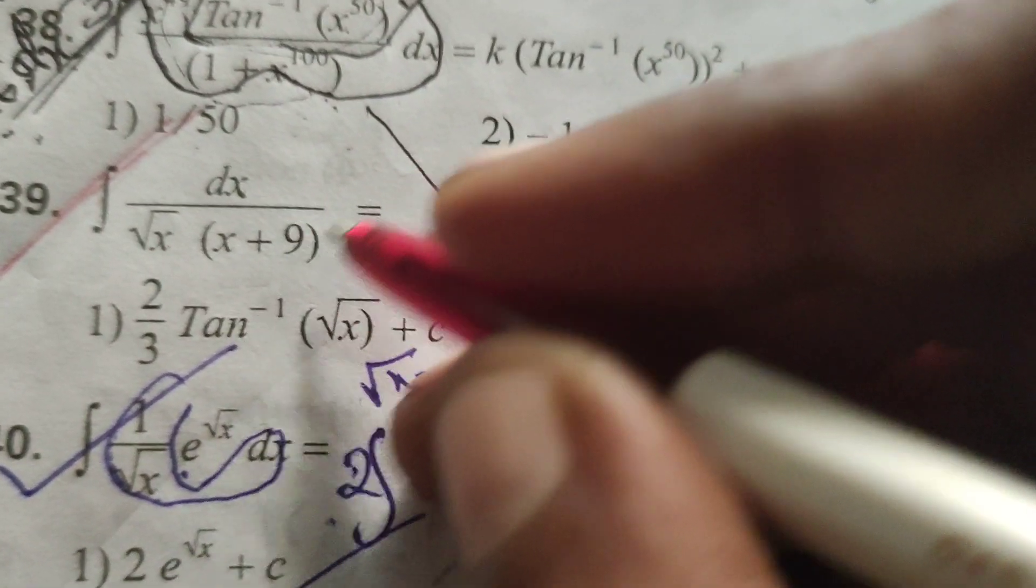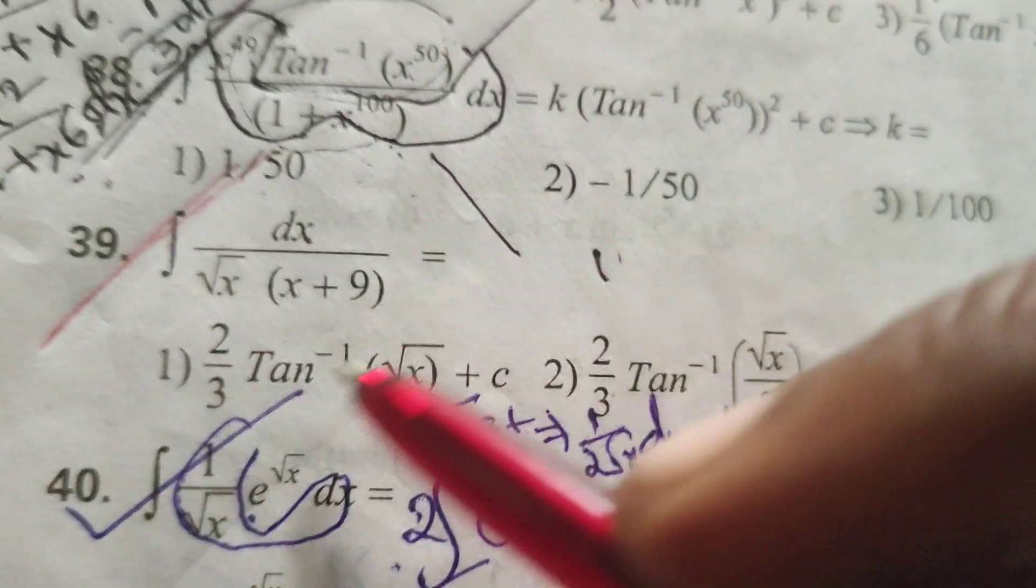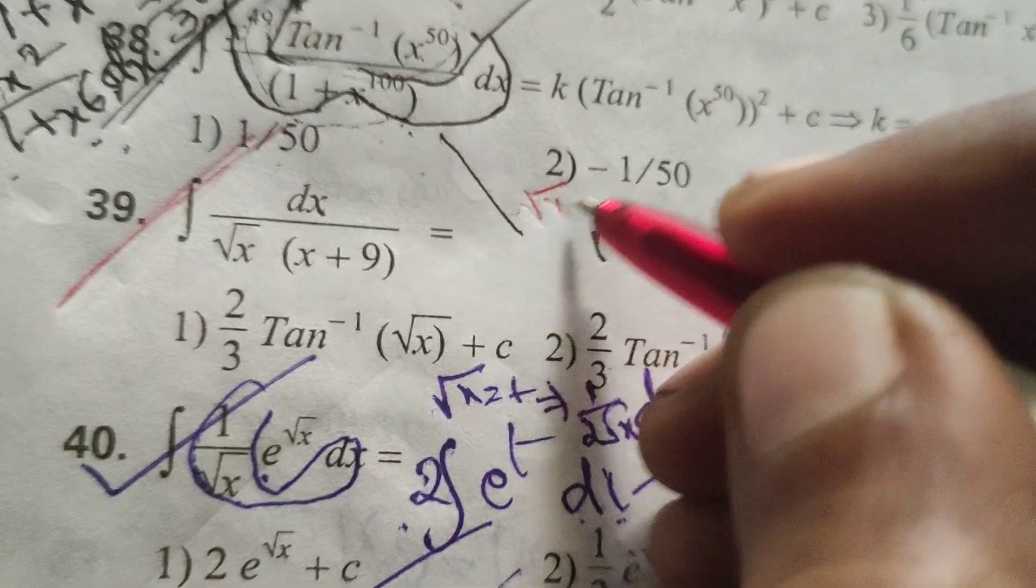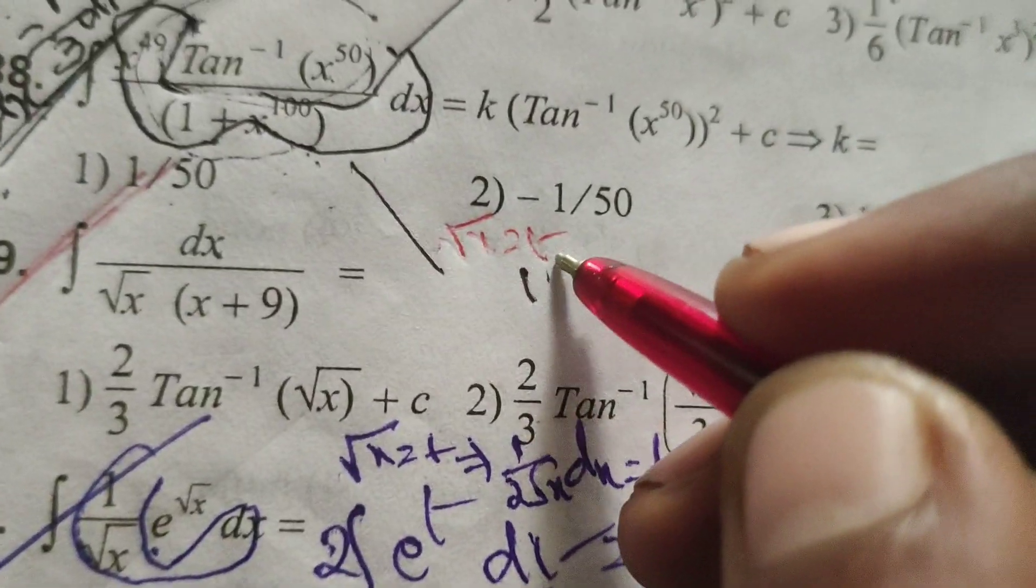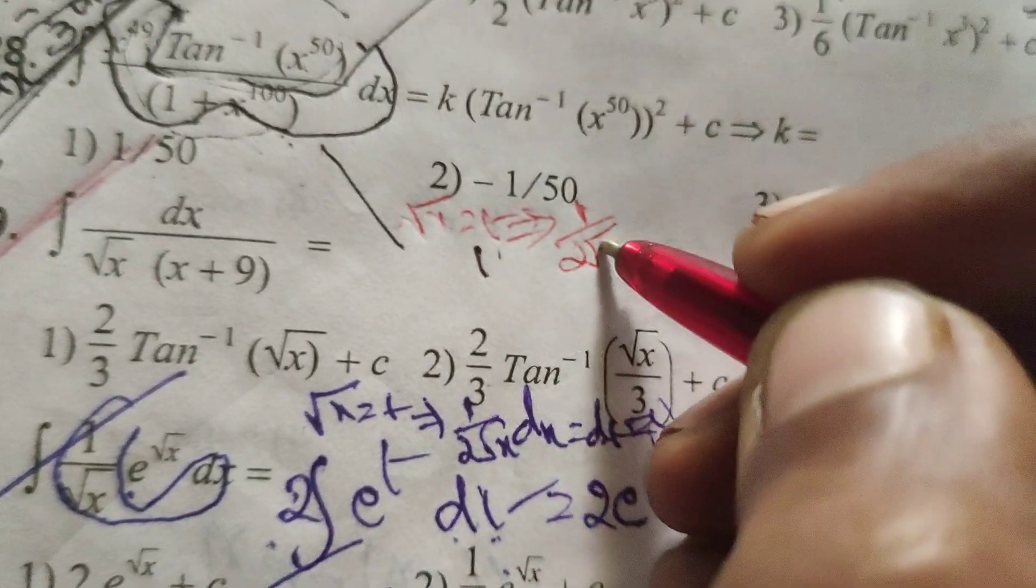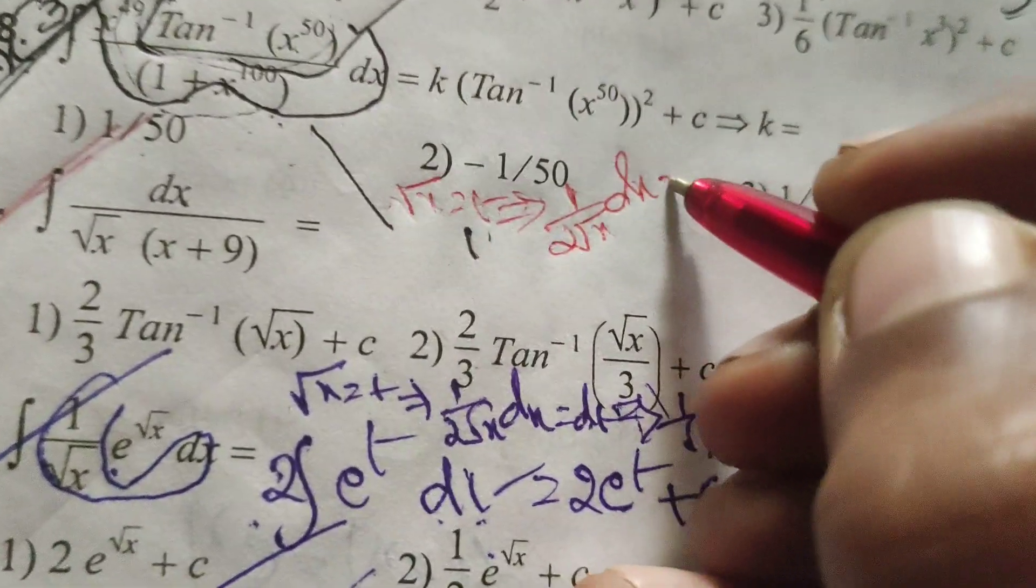Here, using the substitution method in this function, substitute root x equals to t. Differentiating this with respect to x: 1 by 2 root x dx equals to dt.